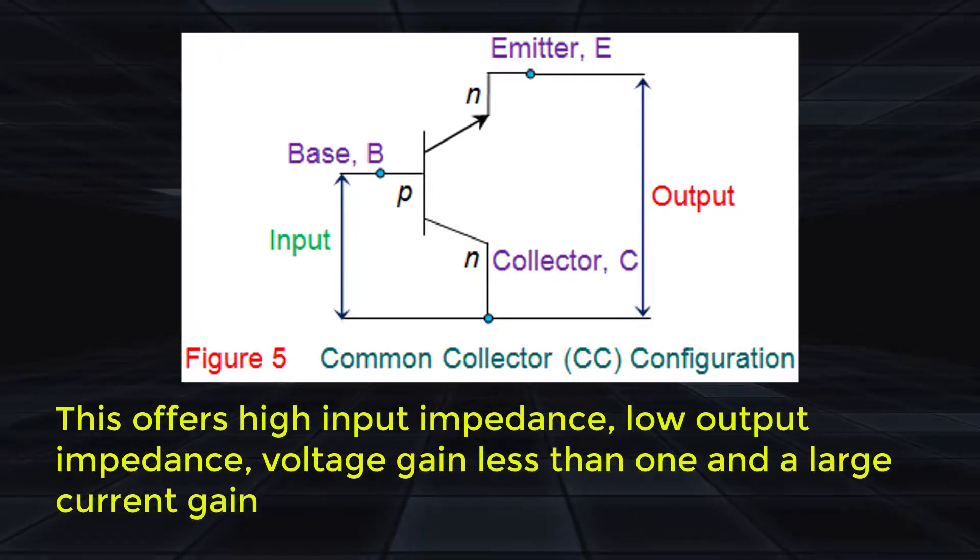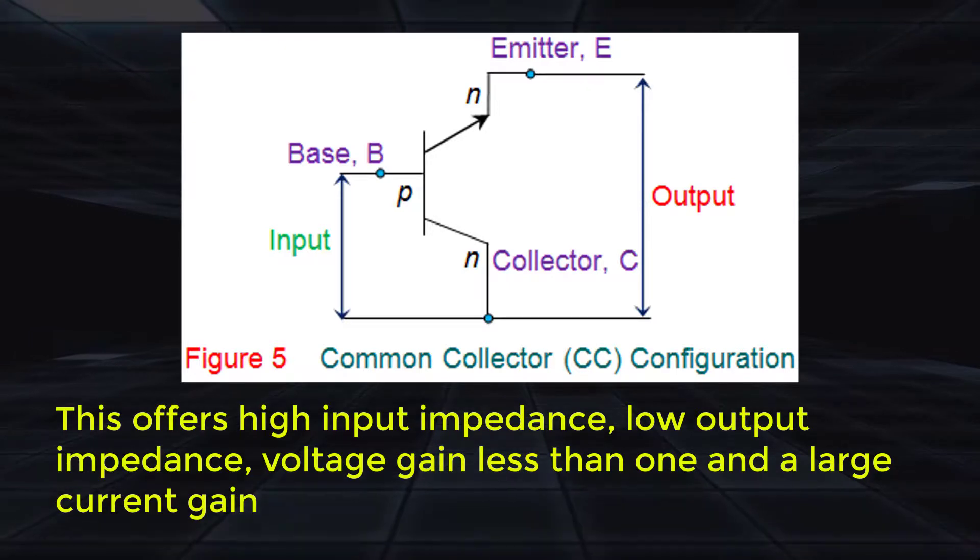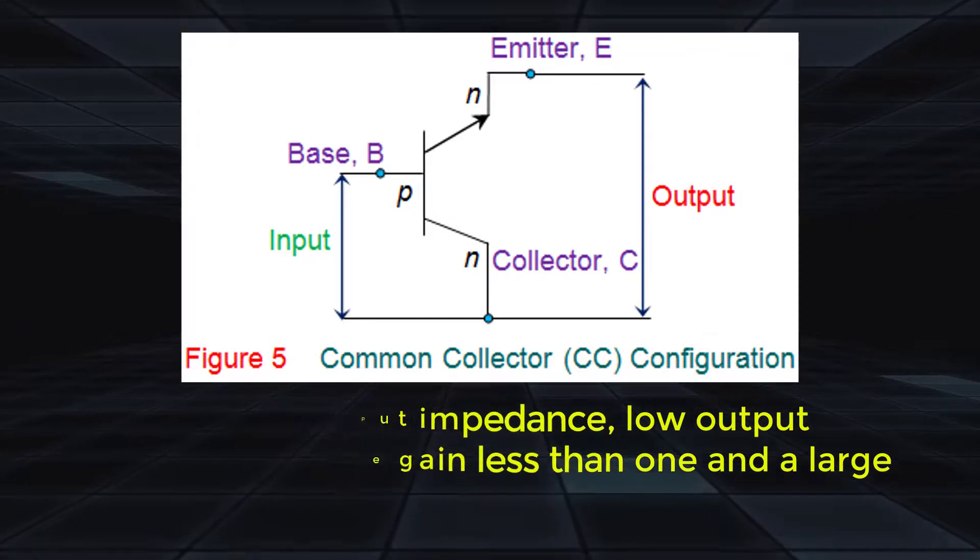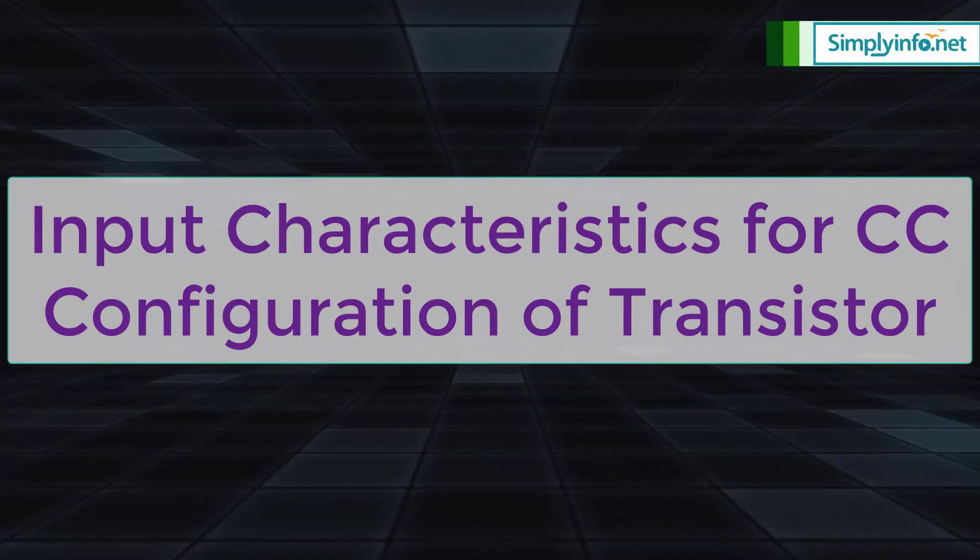This offers high input impedance, low output impedance, voltage gain less than 1 and a large current gain. Input characteristics for CC configuration of transistor.